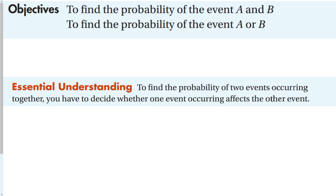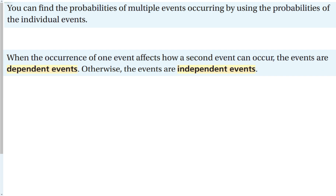To find the probability of two events occurring, you have to decide whether one event occurring affects the other event. This is something you really have to think about when reading the problem. You can find probabilities of multiple events occurring by using the probabilities of the individual events. When the occurrence of one event affects how a second event can occur, the events are called dependent events. Otherwise, they are independent events.